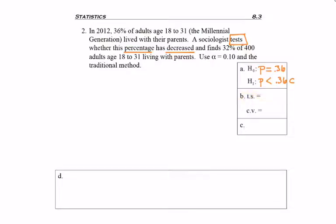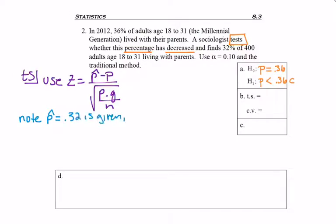Next, we want to find a test statistic, and for that we'll use Z equals P hat minus P divided by the square root of the quantity P times Q divided by N. Remember, if I'm using a proportion hypothesis test, I have this particular test statistic to use. So usually we have to find P hat first, but P hat 0.32 is given in this problem. She finds 32%.